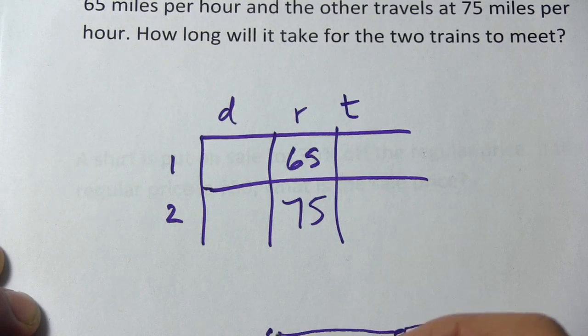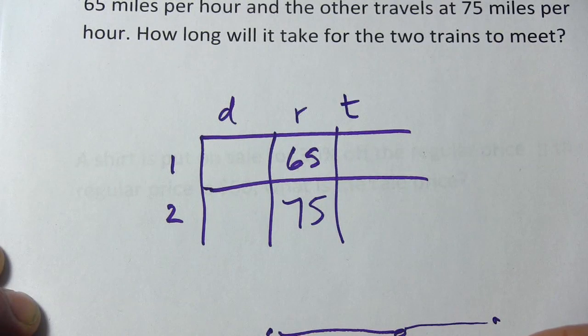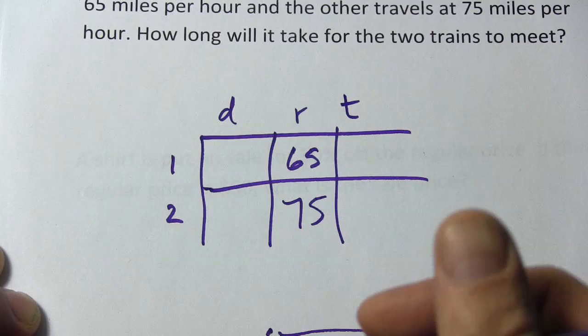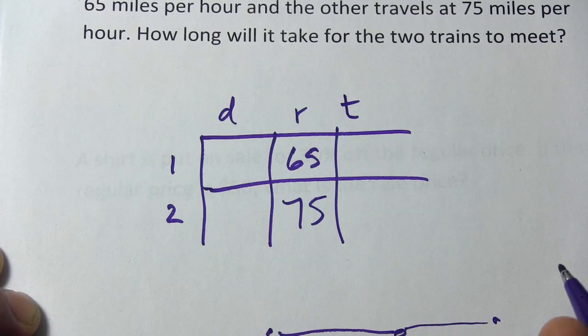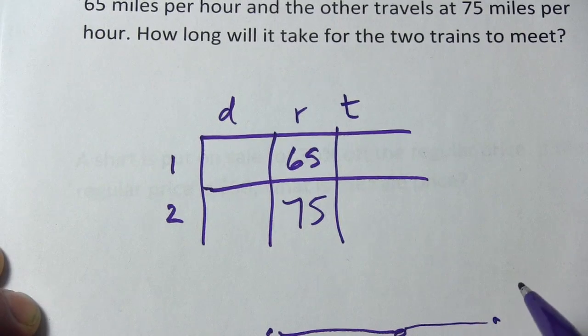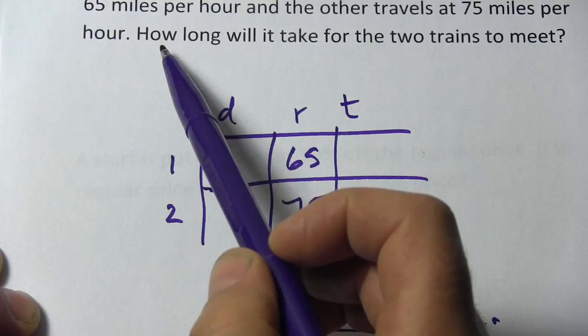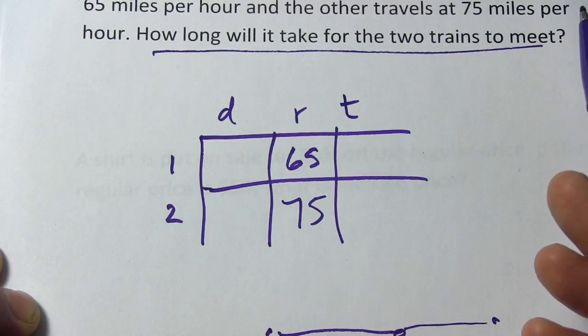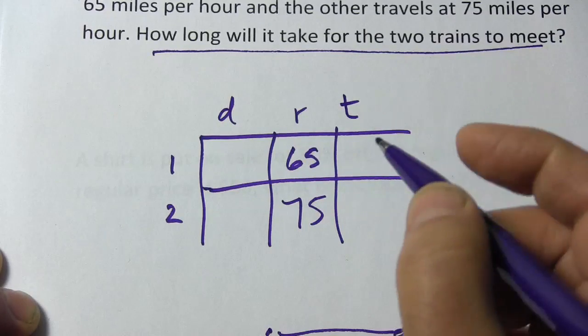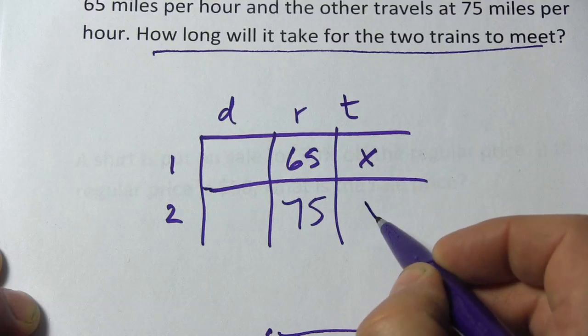They're going to meet at the same moment. So since they left at the same time and they meet at the same time, they both travel the same amount of time. What varies is the distance. And this is actually what we're looking for, how long will it take the two trains to meet. So we're going to call that x and it's going to be the same for both of them.